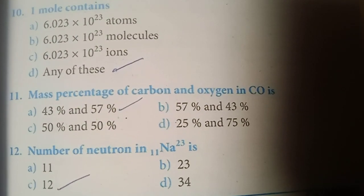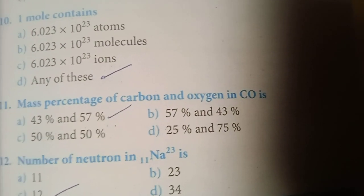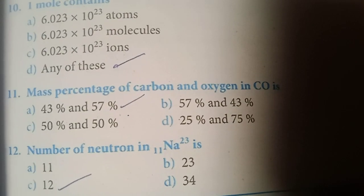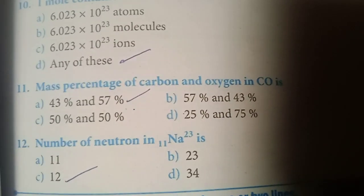Twelfth one. Number of neutron in 11 molecules of sodium-23 is 12. Option C is the answer.